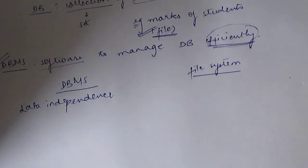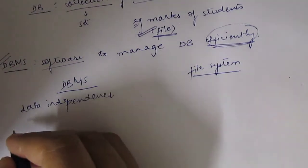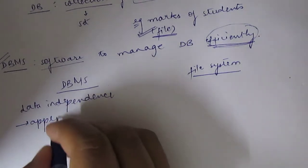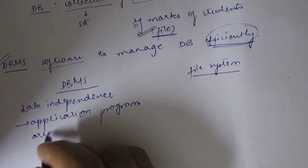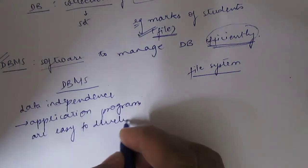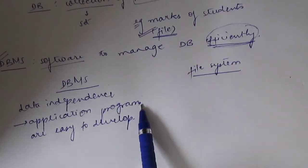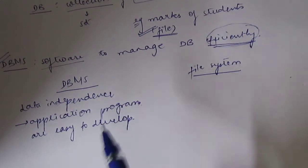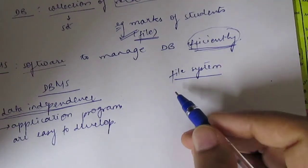In DBMS, data stored in files hides storage information from the external user. So we can access our data without worrying about how it is stored — this is called data independence. Because of data independence, application programs are easy to develop. We need data, and if we have to deal with all storage and implementation details, complexity increases. So when we need data independence, we use DBMS. In the file system, there is no data independence.